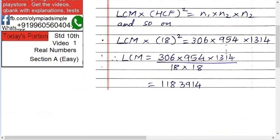On this side, LCM = (306 × 954 × 1314) ÷ (18 × 18). So you can do the square also, or you can directly divide it by 18. I suggest you follow the Vedic mathematics for this.